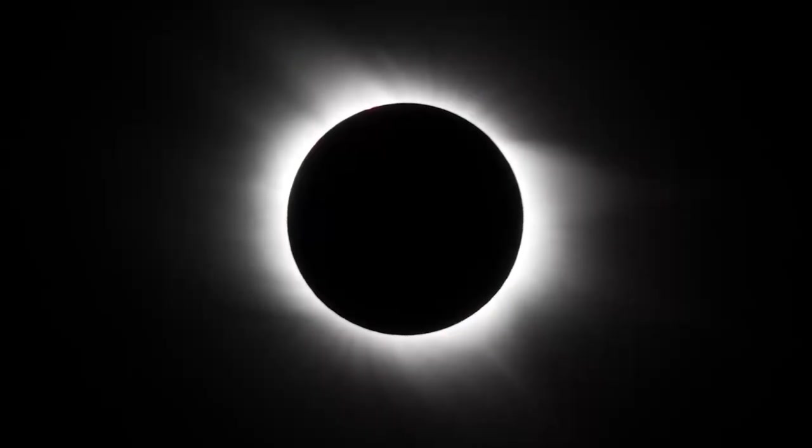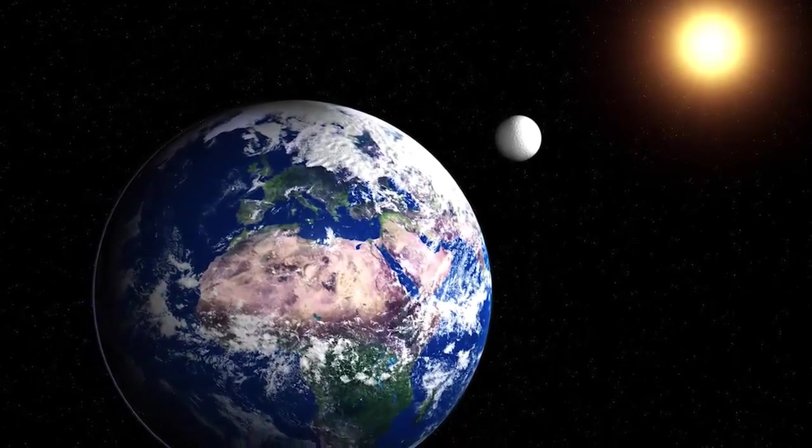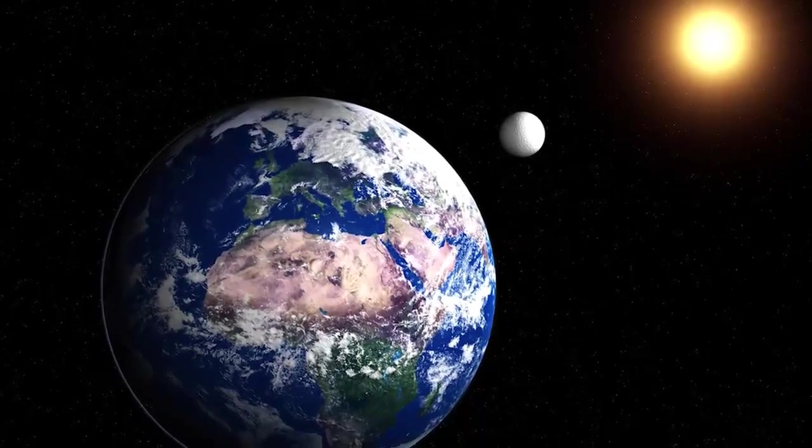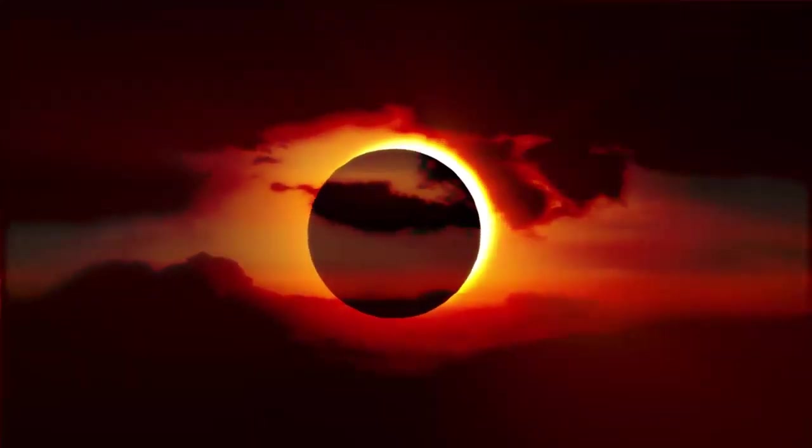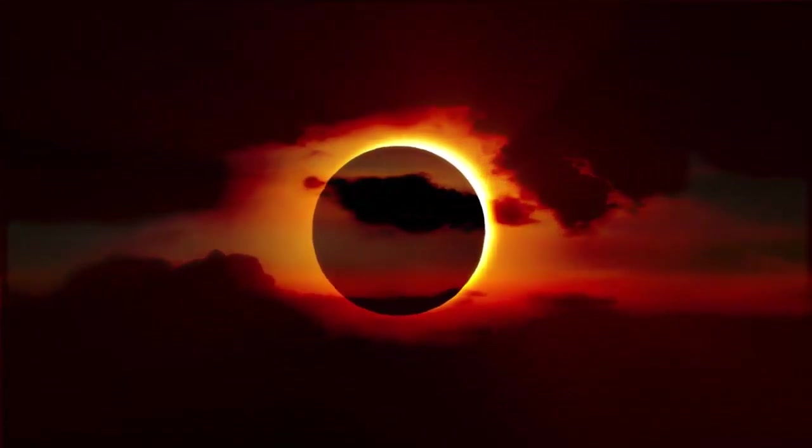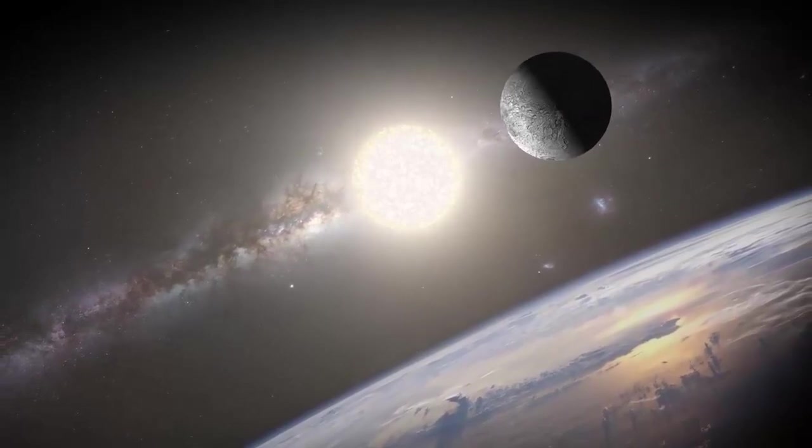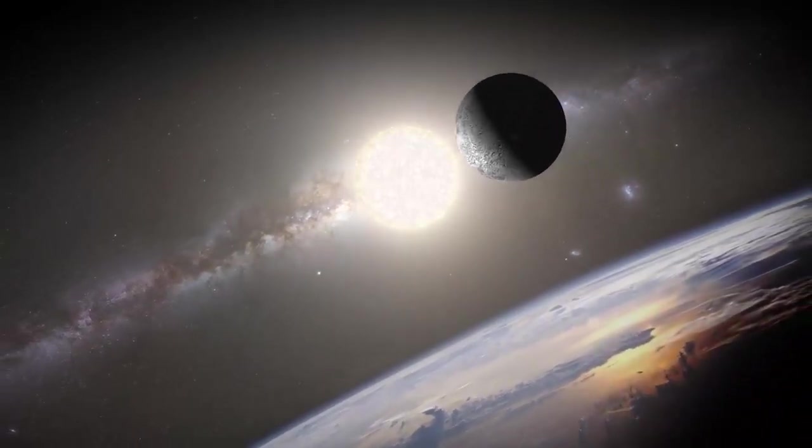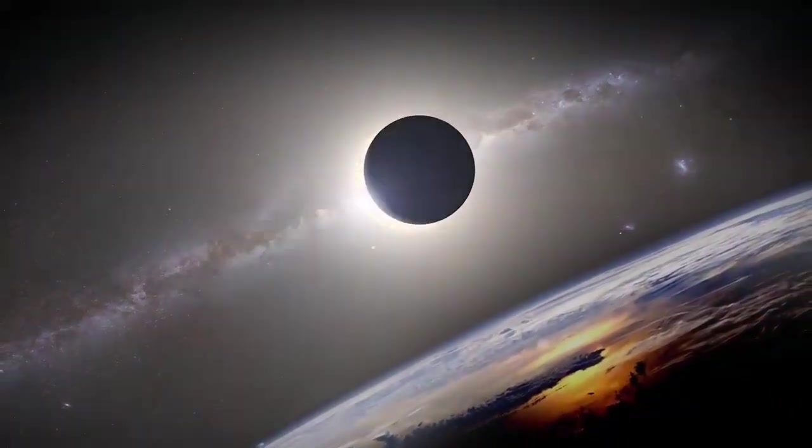A total solar eclipse is only possible because the Sun is 400 times larger than the Moon and is about 400 times farther away from the Earth. The result is that during a total solar eclipse from Earth, the Sun and the Moon appear to be the same size creating a perfect match. And it is only because of these total solar eclipses that we have been able to make scientific discoveries that otherwise could have never been made.